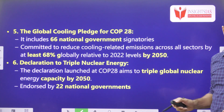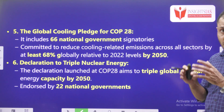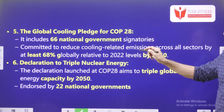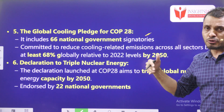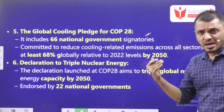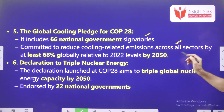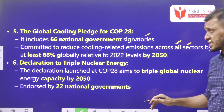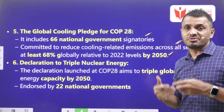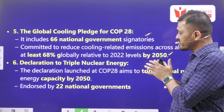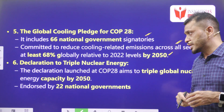Outcome number five is the Global Cooling Pledge, mainly related to emissions coming from coolants. Out of the entire UNFCCC, around 66 nations are signatories and committed to reduce cooling-related emissions. In all sectors, we should reduce cooling emissions by at least 68% globally by 2050 compared to 2020 — bringing emissions down to 32% of current levels.